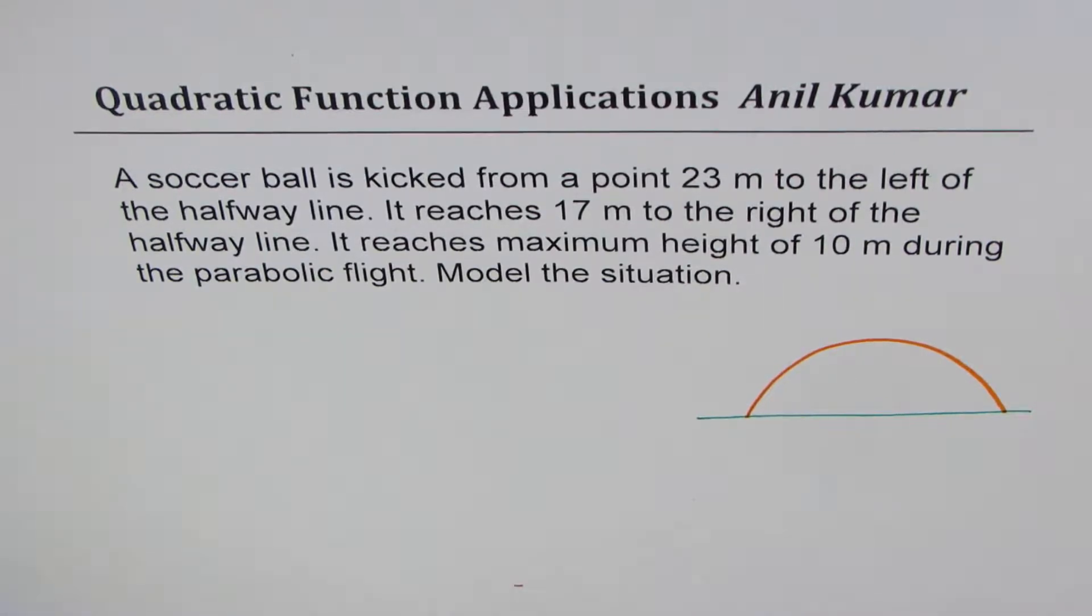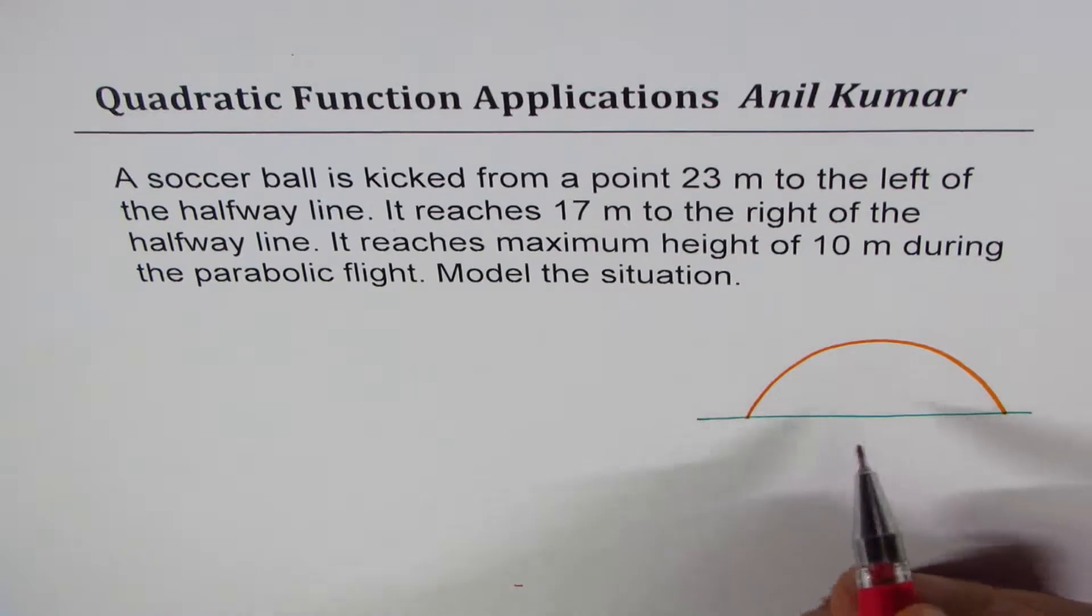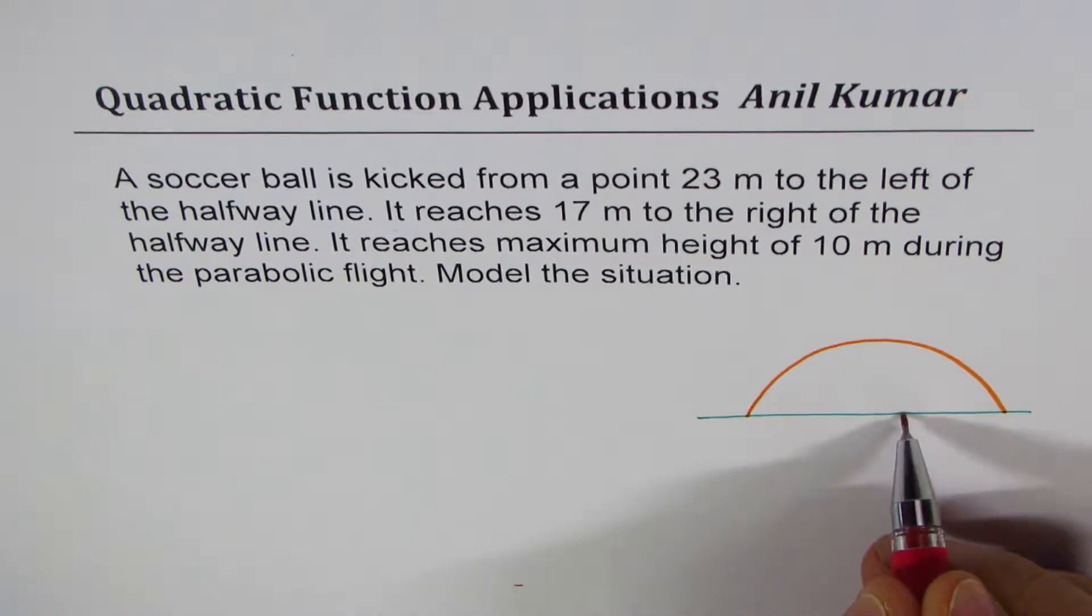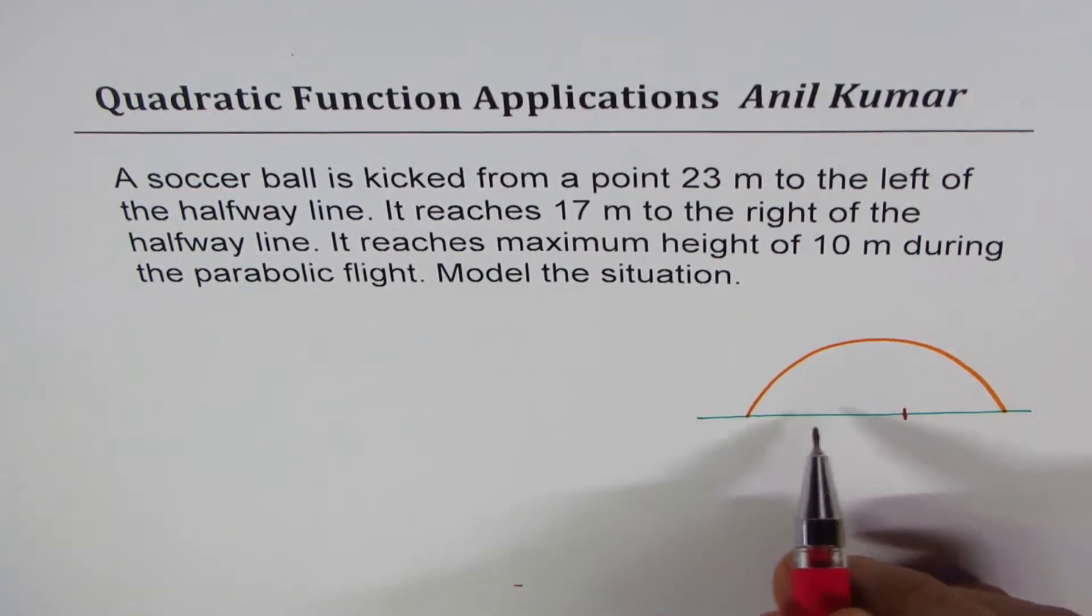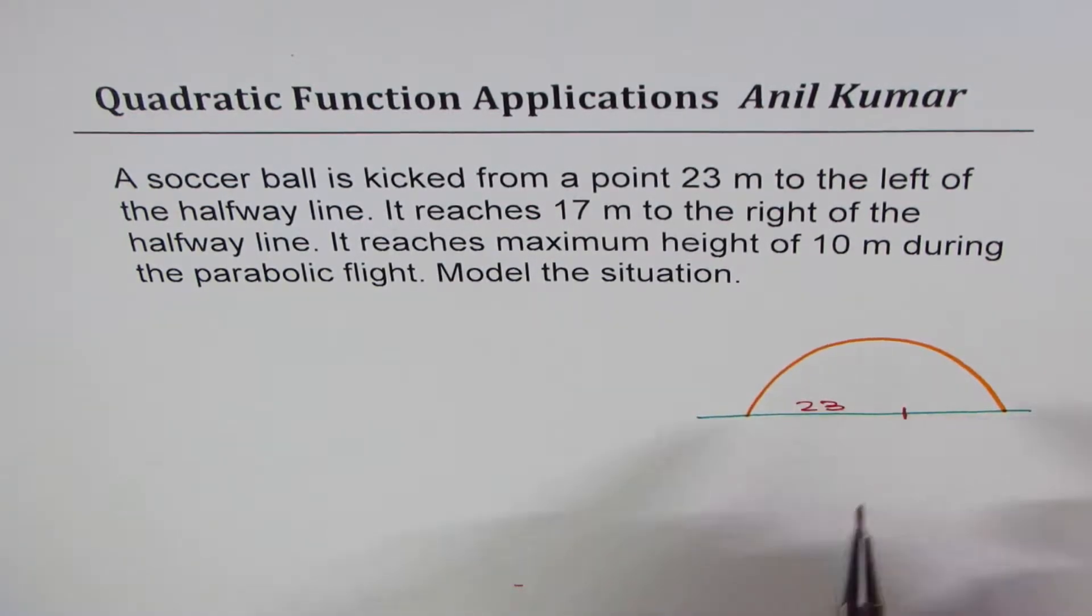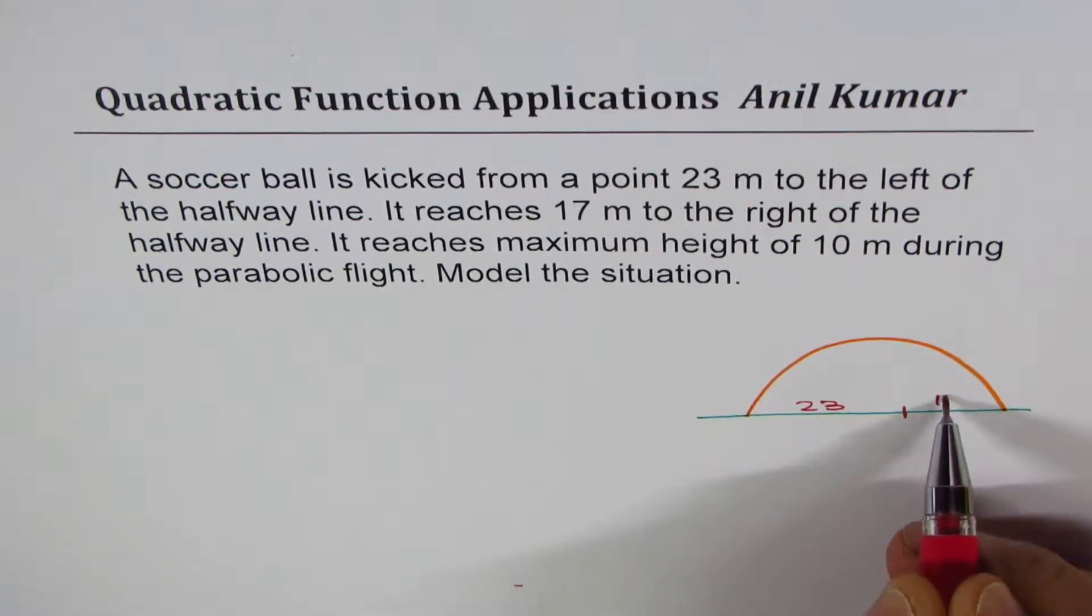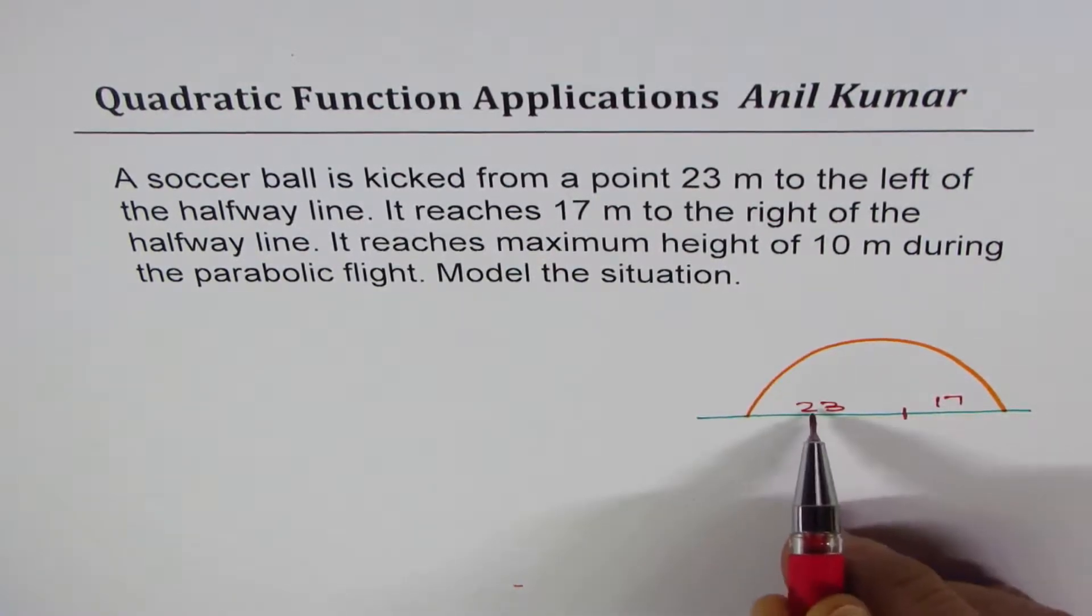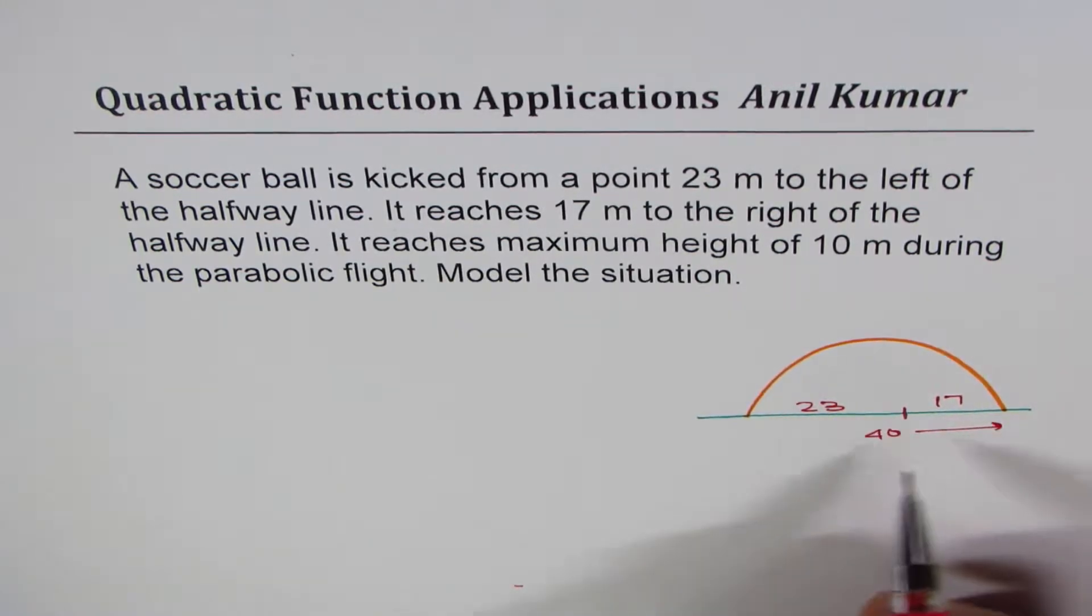Now it says the ball is kicked from a point 23 meters to the left of the halfway and 17 meters to the right. So that really means that if this distance from where it is kicked to the halfway is 23 and after that where it lands is 17, the total distance will be add them up. So it comes to 40. So 40 becomes the total distance.